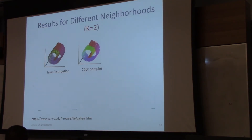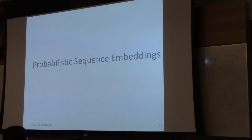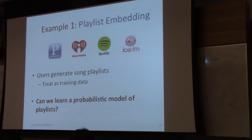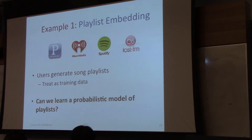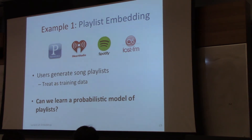Moving on to the next part of the lecture, which is probabilistic sequence embeddings. Here's one example: people create a lot of playlists on online music services such as Pandora, Spotify, etc. You can think of song playlists as sequences of songs, and can we learn a probabilistic model of sequences of songs?